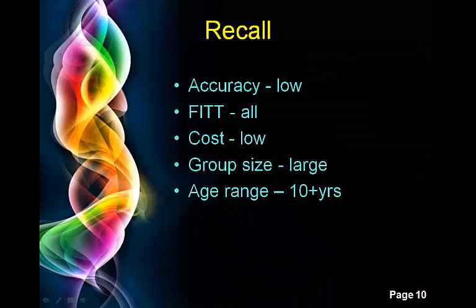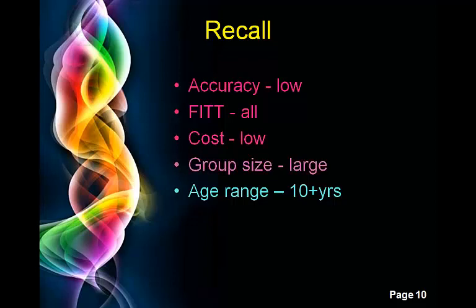Recall has low accuracy because people struggle to remember how much activity they've done — even at the end of a week or the end of a day. The good thing is it does take into account all of the FIT principle, and the cost is low. This time you can have a large group size because it may only be something quite short rather than an intensely written diary. The age range is 10 years and over, because someone under 10 is not considered literate enough to write a detailed description of activity they've done.